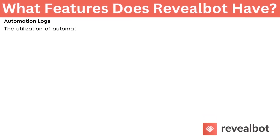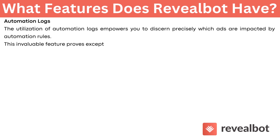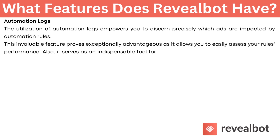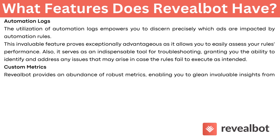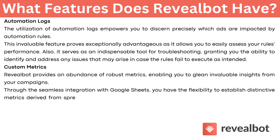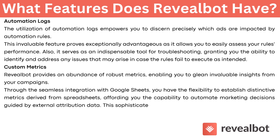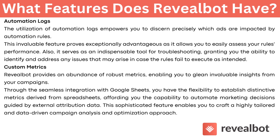Automation Logs: the utilization of automation logs empowers you to discern precisely which ads are impacted by automation rules. This feature allows you to easily access your rules' performance and serves as an indispensable tool for troubleshooting, granting you the ability to identify and address any issues that may arise if rules fail to execute as intended. Custom Metrics: Revealbot provides an abundance of robust metrics, enabling you to glean invaluable insights from your campaigns. Through seamless integration with Google Sheets, you can establish distinctive metrics derived from spreadsheets, enabling you to automate marketing decisions guided by external attribution data.